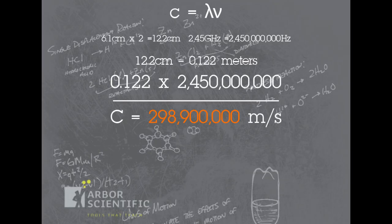The actual speed of light is 299,792,458 m per second.